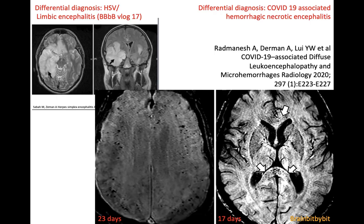In the differential diagnosis you can think of herpes encephalitis, which can also give hemorrhages sometimes. Herpes usually involves the temporal lobes, so if they are spared on imaging and if CSF — which is usually a quick diagnostic test — is negative for herpes simplex virus, you can consider the hemorrhagic variant of ADEM.